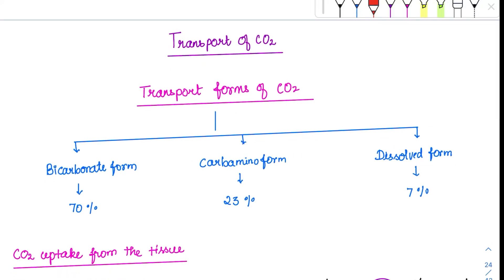Now coming to the transport of carbon dioxide. Carbon dioxide is transported in three different forms, unlike oxygen which is transported in two forms — dissolved and hemoglobin-bound. Here also we have the dissolved form, which is very less at 7%, and the hemoglobin-bound form at 23%. The most commonly transported form of carbon dioxide is the bicarbonate form, which accounts for 70%.